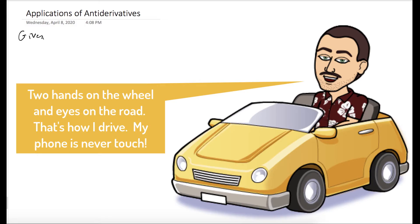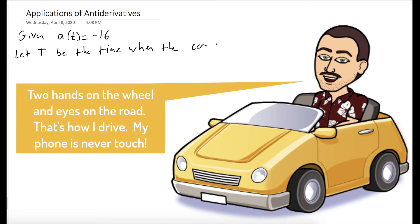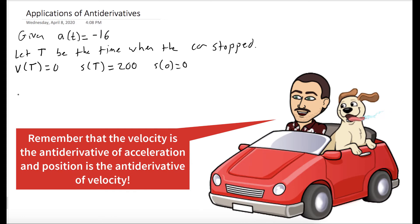We're given that our acceleration is constantly negative 16. We know that our car eventually stops, so we'll let capital T be the time when our car comes to a complete stop. What does it mean to be stopped? It means that our velocity at this time is equal to zero. And we were given that our car stops 200 feet away from when we applied the brakes, so S of capital T is 200. We'll say that we start at position zero.